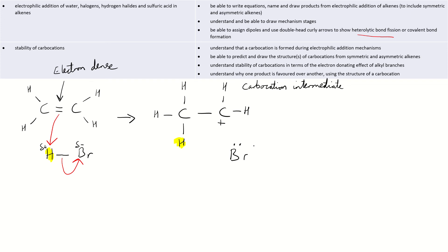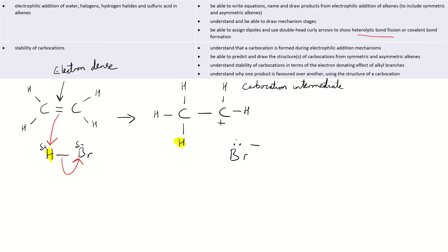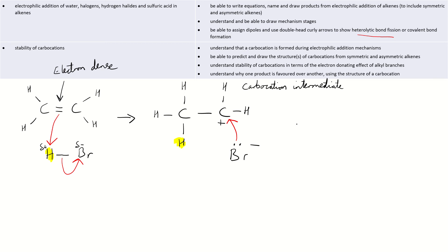What happens next: our bromide ion — which formed because bromine took the hydrogen's electrons in that covalent bond — will now come in and join to the carbon. So we get a bond forming between the bromine and the carbon, and the product looks like bromoethane.